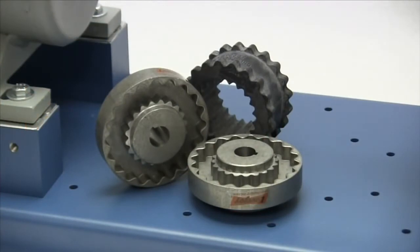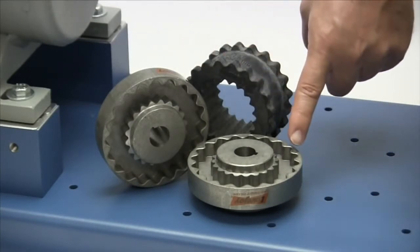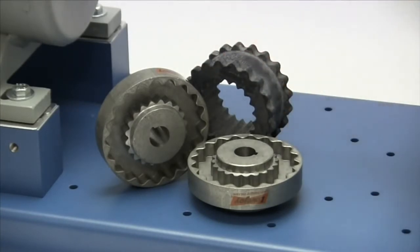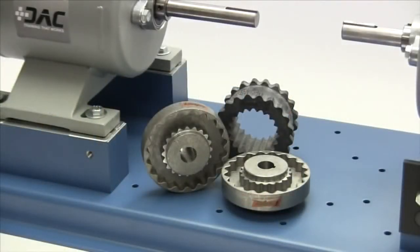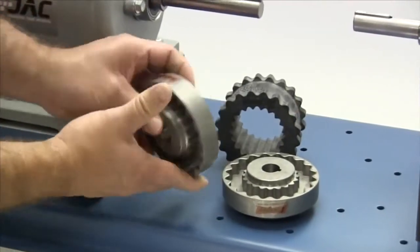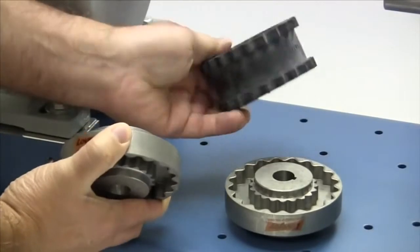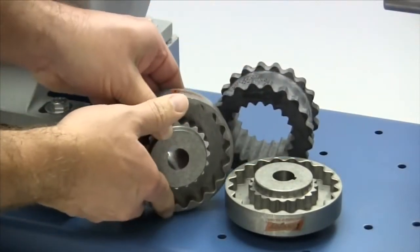The following components are provided with the purchase of your Lovejoy S-Flex style coupling. You should have two flange style hubs, or flanges, and a sleeve. Always inspect the components to ensure you've received the proper parts and coupling necessary to accommodate your application requirements.